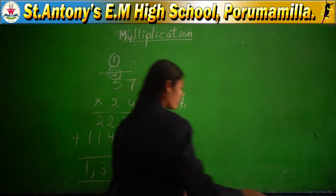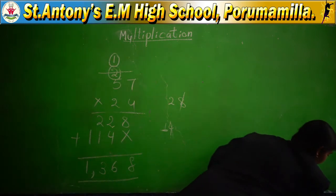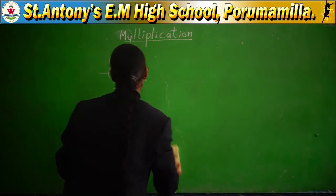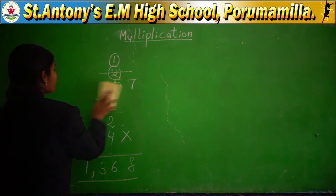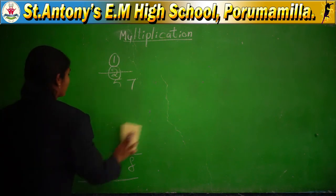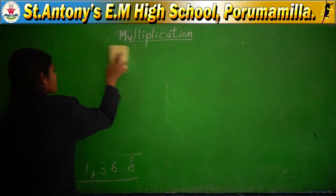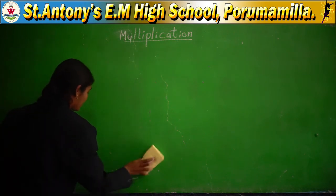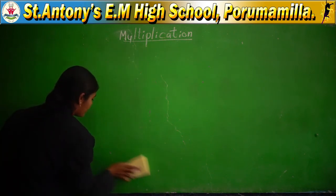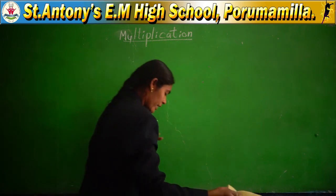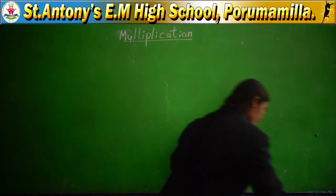Is it clear? Maybe you understood double digit multiplication. Now I am going to explain some more important points.